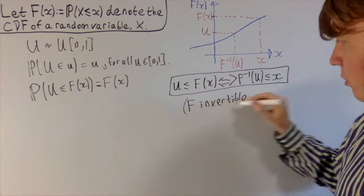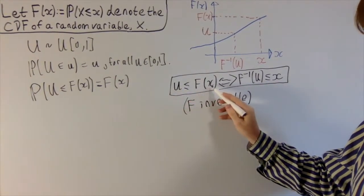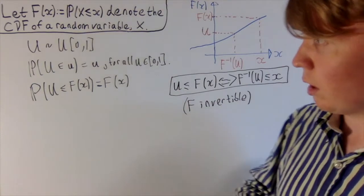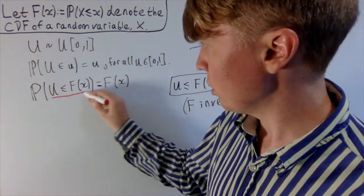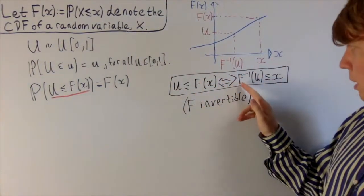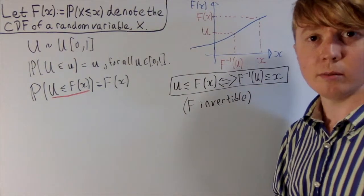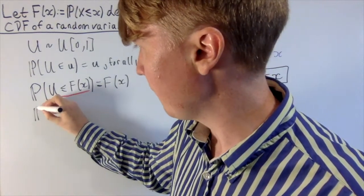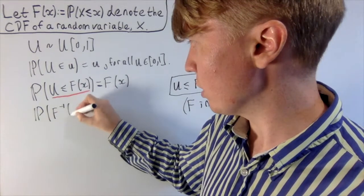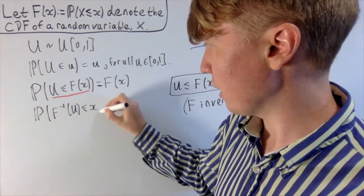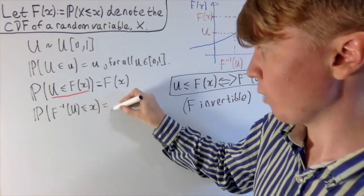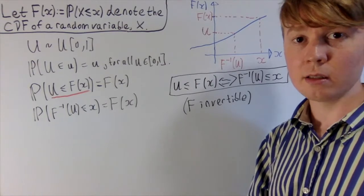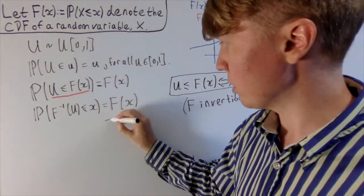We're going to use this now, because the inequality u is less than or equal to F(x) holds if and only if F-inverse of u is less than or equal to x. So we can replace u ≤ F(x) by F-inverse(u) ≤ x, because these are the same thing — they happen if and only if each other, so they have the same probability. This is the probability that F-inverse(u) is less than or equal to x, which is still equal to F(x). And F(x) is the CDF of our random variable X, so this is the probability that capital X is less than or equal to x.